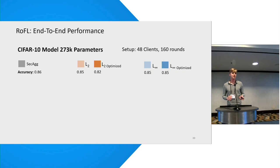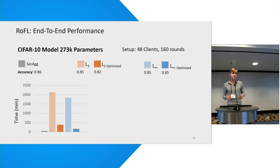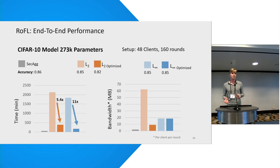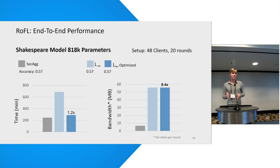We implemented ROFO as a prototype and compared its performance with and without optimizations against secure aggregation as a baseline. For a model with 270,000 parameters, the main timing bottleneck is the range proof generation on the client side. With further optimizations we can reduce timing for both the L2 and L∞ norms significantly. Bandwidth costs are dominated by the size of the commitments, and the L2 norm optimization helps here because it reduces the number of parameters through L2 norm-preserving model compression. As we increase model complexity — for example a language model with 800,000 parameters — the timing overhead of ROFO becomes smaller, only a factor of 1.2.